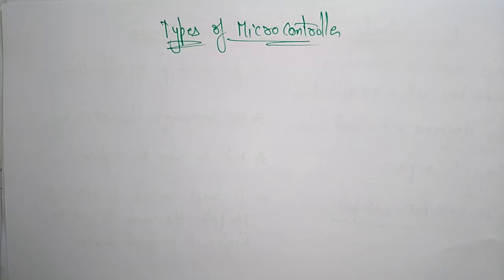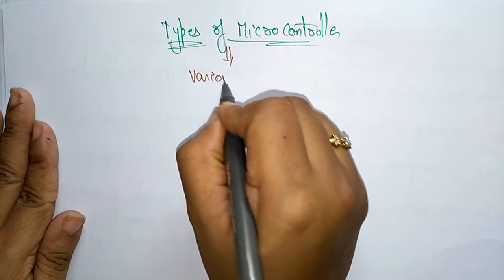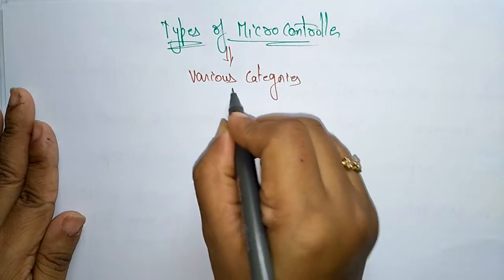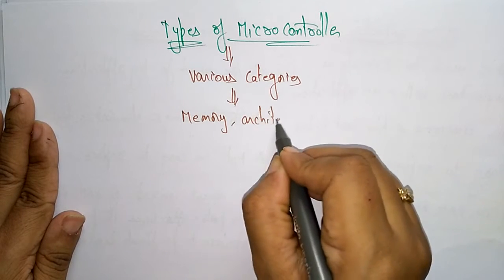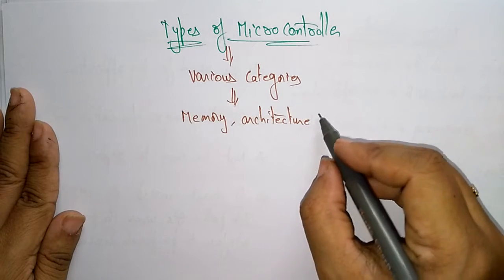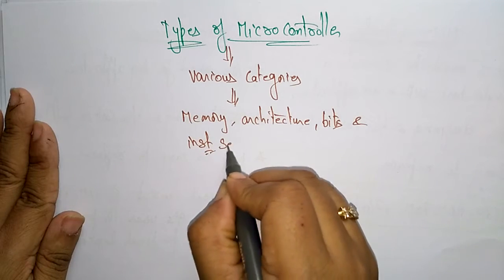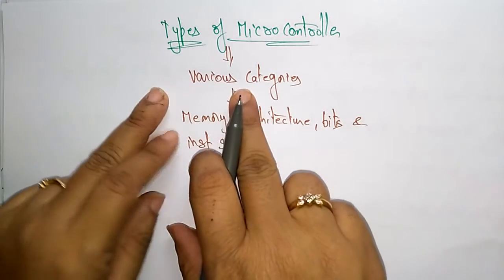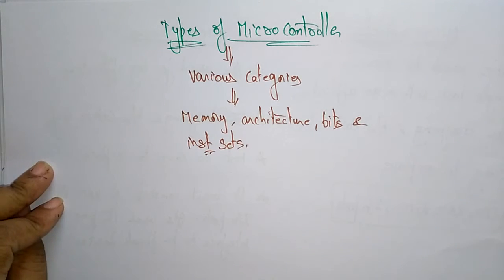Let us continue with the topic of the 8051 microcontroller. In the previous video I explained about the main features of the microcontroller, and now let us see the different types of microcontrollers. A microcontroller is divided into various categories based on memory, architecture, bits, and instruction sets.